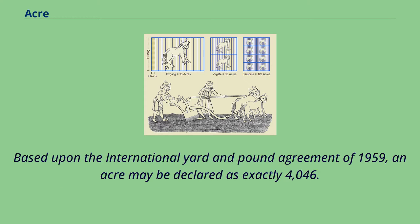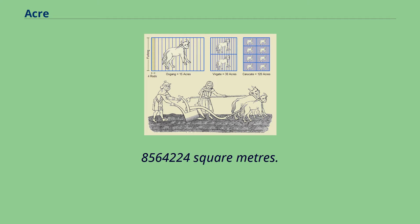Based upon the International Yard and Pound Agreement of 1959, an acre may be declared as exactly 4,046.8564224 square meters.